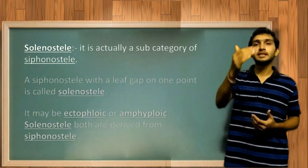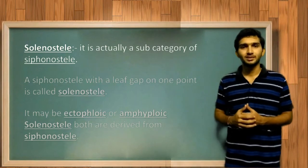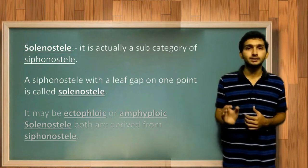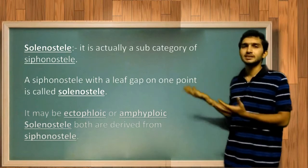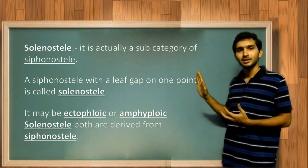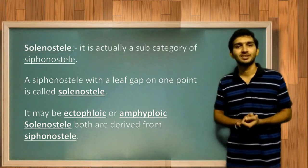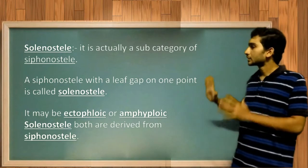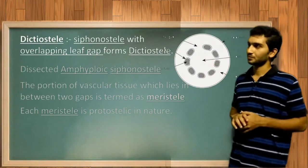The solanostele is derived as a subcategory of siphonostele. A siphonostele with one leaf gap at one point is called solanostele. It may contain ectophloic solanostele or amphiphloic solanostele, both of which are derived from their respective siphonosteels and show the same similarities.